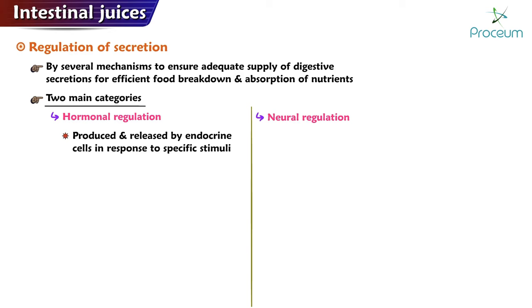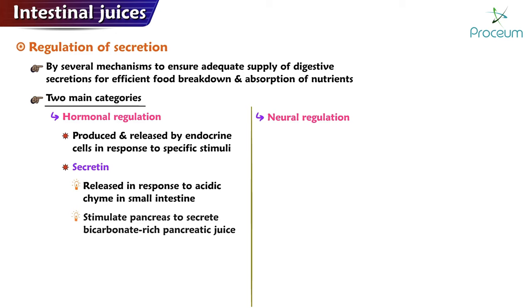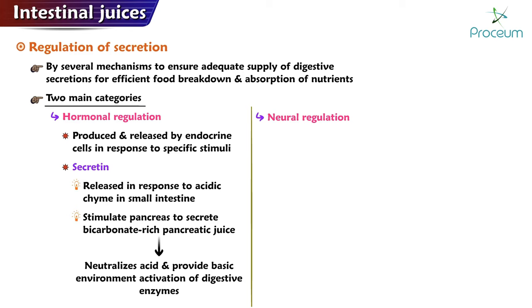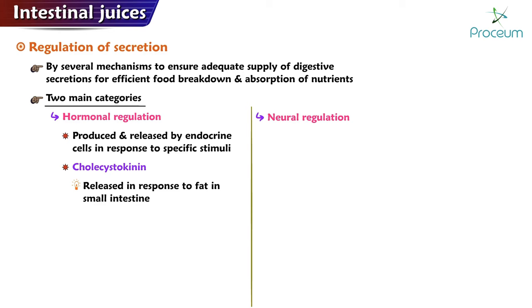Hormonal regulation: the secretion of various components of intestinal juice is regulated by hormones produced and released by endocrine cells in response to specific stimuli. For example, secretin is released in response to the presence of acidic chyme in the small intestine and stimulates the pancreas to secrete bicarbonate-rich pancreatic juice, which neutralizes the acid and provides a basic environment for the activation of digestive enzymes.